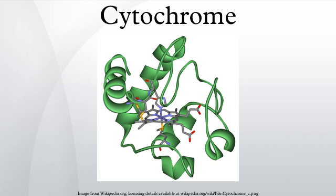In mitochondria and chloroplasts, these cytochromes are often combined in electron transport and related metabolic pathways. A completely distinct family of cytochromes is known as the cytochrome P450 oxidases, so named for the characteristic Soret peak formed by absorbance of light at wavelengths near 450 nm when the heme iron is reduced and complexed to carbon monoxide. These enzymes are primarily involved in steroidogenesis and detoxification.